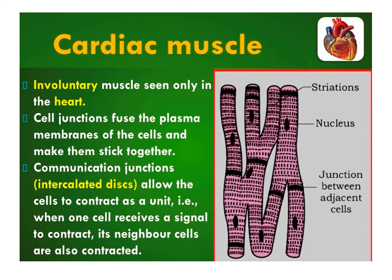Cardiac muscles are made up of short, cylindrical, uninucleated fibers and are present only in the heart wall. Cell junctions fuse the plasma membranes of several muscle cells to form a branching pattern. Intercalated discs or communication junctions are present at some fusion points, which allow the muscle cells to contract as a unit. The cardiac muscles are faintly striated and are involuntary in nature.